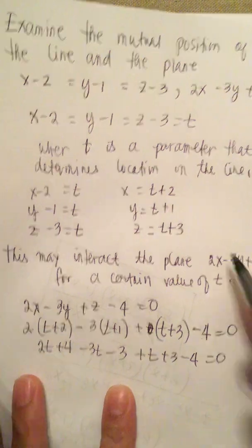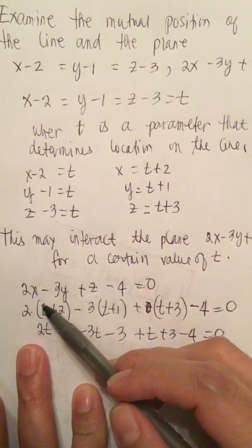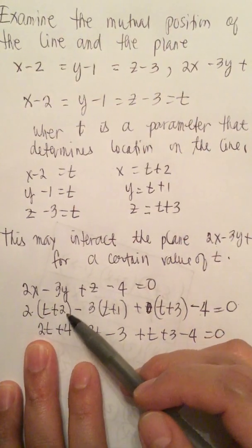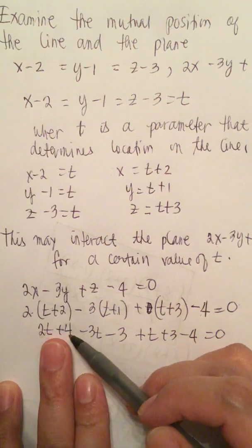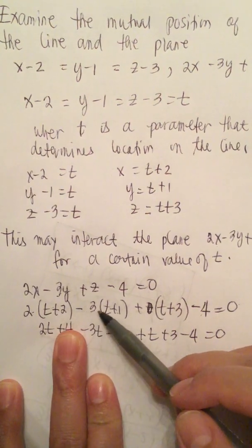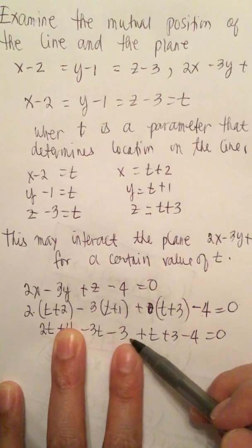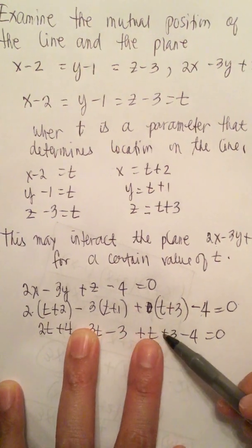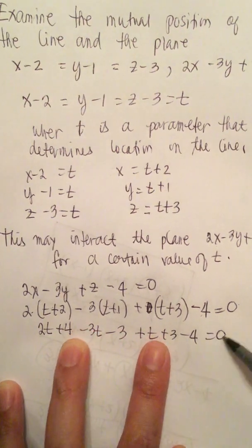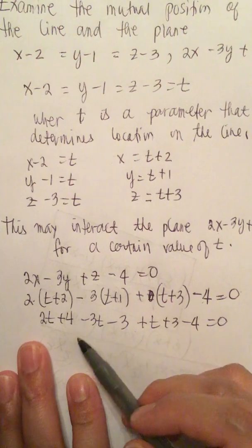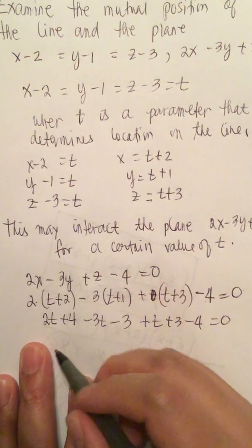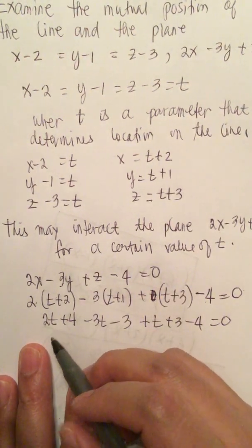Minus 4 equals 0. And then we distribute the 2 inside the parentheses, we get 2t plus 4, and then minus 3t minus 3, and then we get t plus 3 minus 4 equals 0.